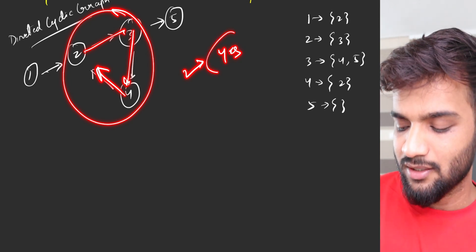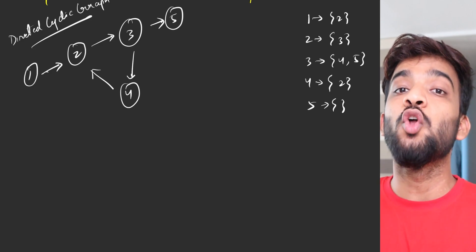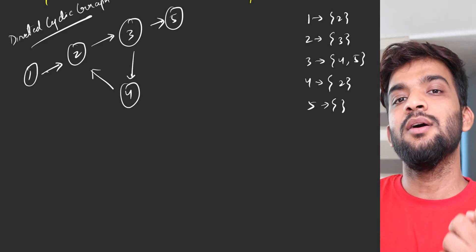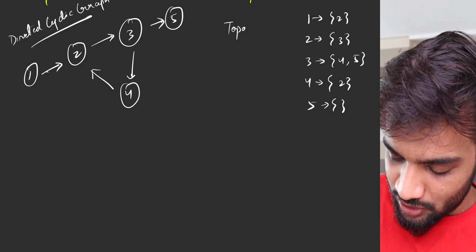But this graph has a cycle. If you carefully see, this graph has a cycle and you need to tell me that yes it has a cycle. So how do you detect it? Since I know a topo sort is not possible for a graph that has a cycle, I'll still try to apply topological sort to this.